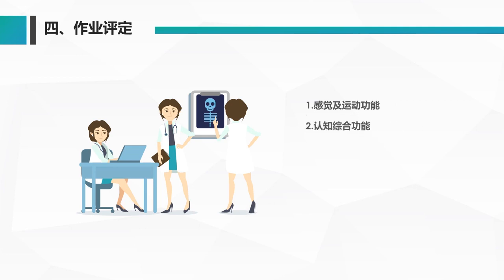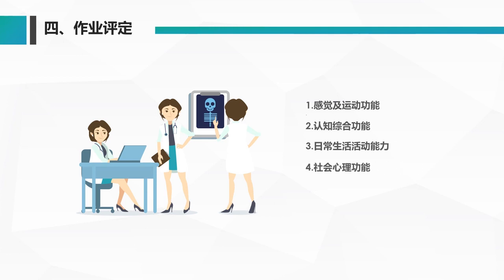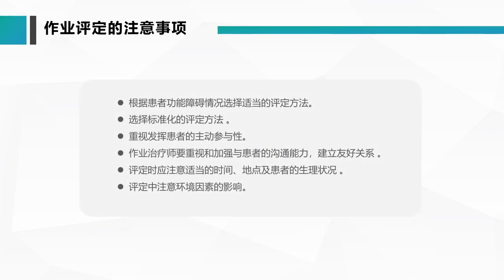作业的评定包括：第一，感觉和运动的功能；第二，认知综合功能；第三，日常生活活动能力；第四，社会心理功能；第五，环境评定；第六，职业能力的评定。在评定时要注意：根据患者的功能障碍情况选择适当的评定方法；选择标准化的评定方法；重视发挥患者的主动差异性；作业治疗师要重视并加强与患者的沟通，建立友好和谐的关系。